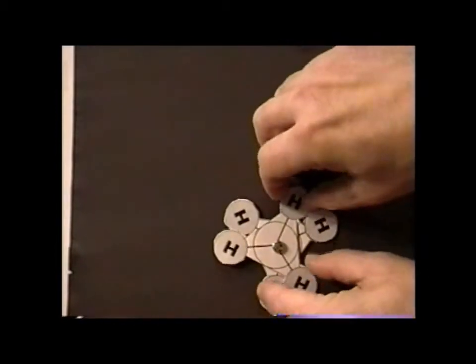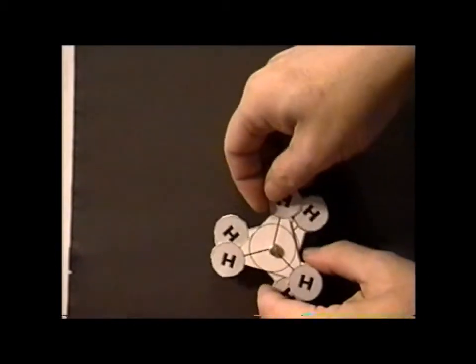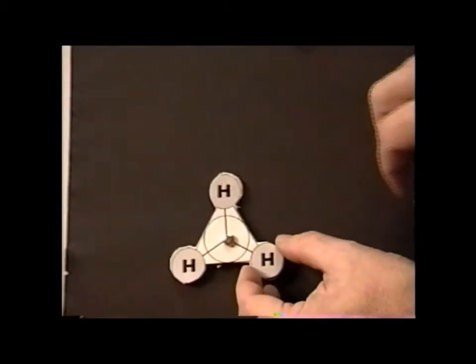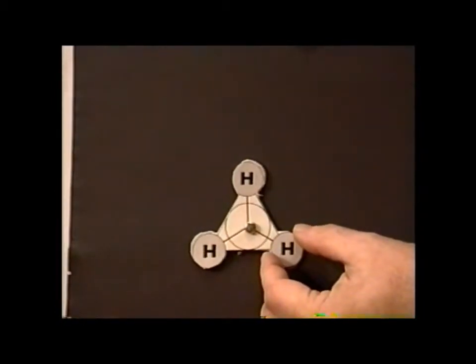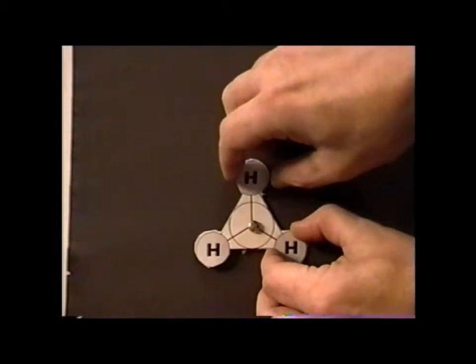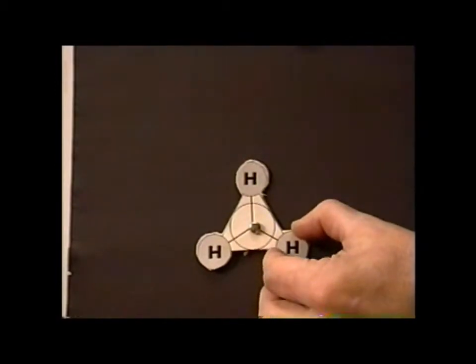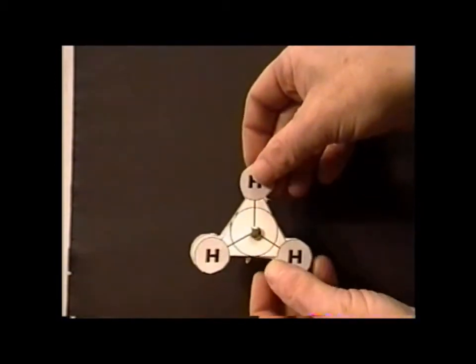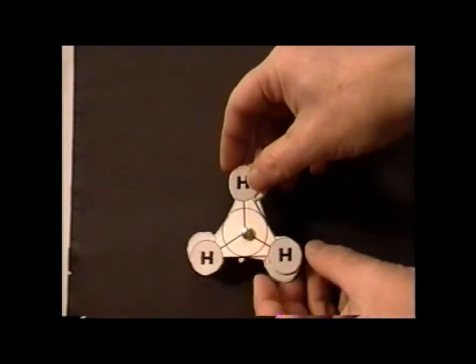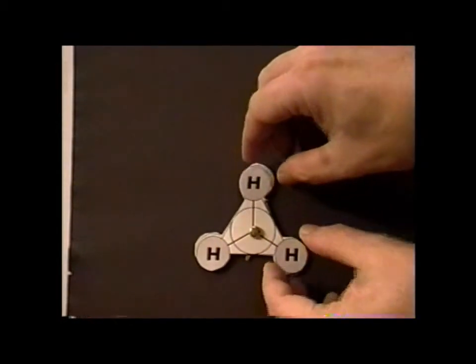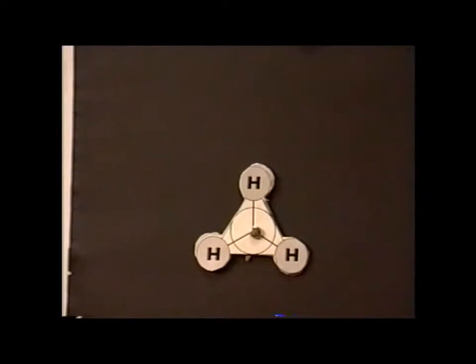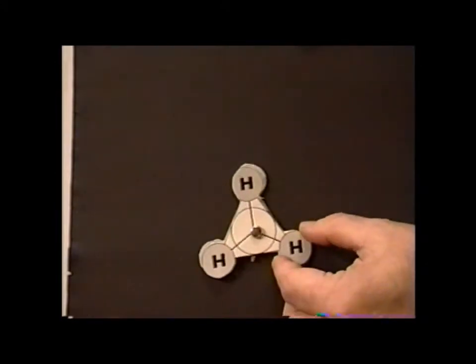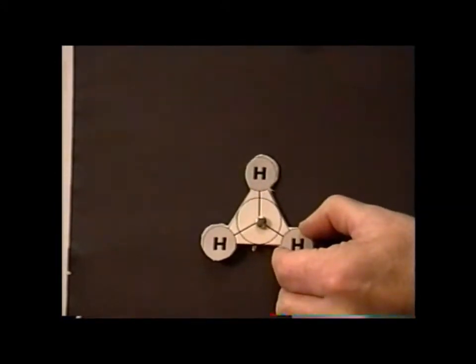Now, for ethane we can have several different conformations. One of the conformations we have where the substituents that are attached to the second carbon are directly behind the substituents from the first carbon. This is the so-called eclipse formation, because it reminds us of a solar or lunar eclipse.